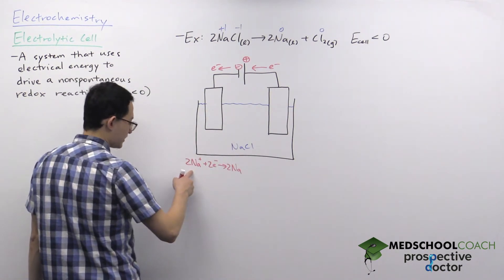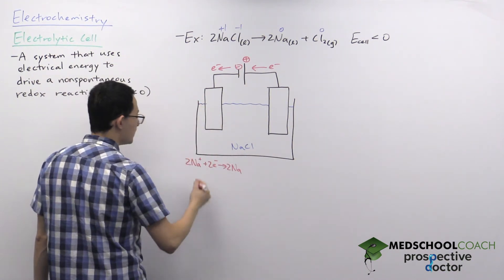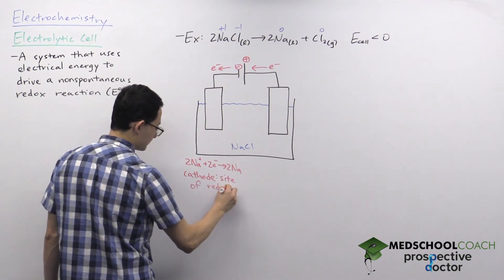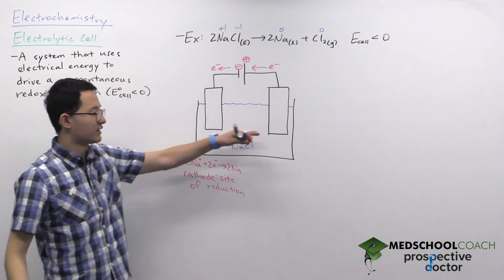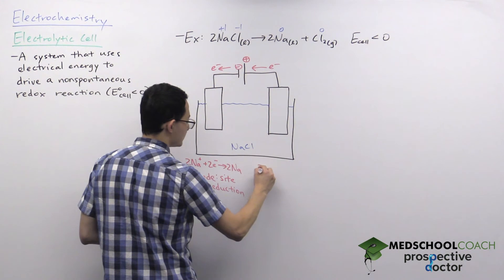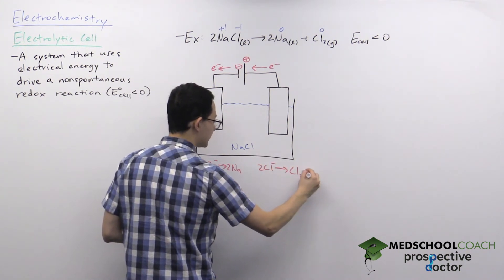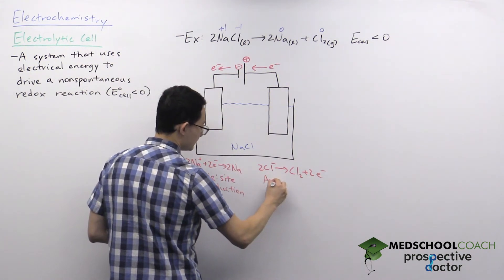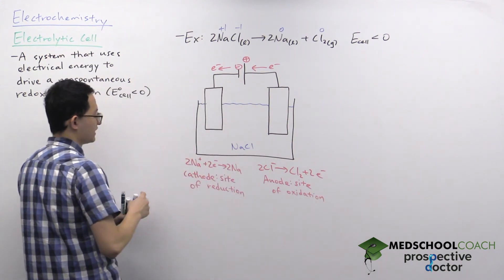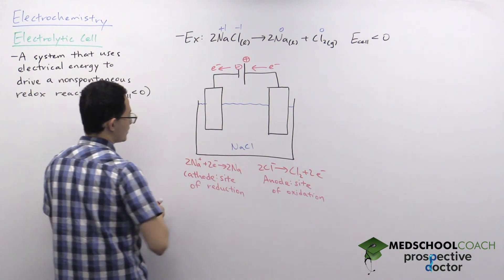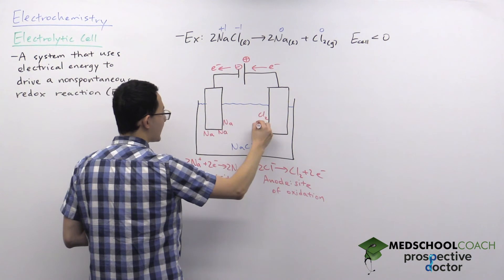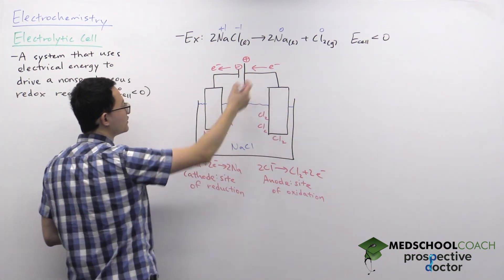The sodium cations are getting reduced at this electrode, so even though it's inert, we call it the cathode — it is the site of reduction. At the other electrode, electrons are leaving, because chlorine is being oxidized: 2Cl⁻ → Cl₂ + 2e⁻. This electrode is called the anode — the site of oxidation. Around the cathode we're producing sodium metal, and around the anode we're producing chlorine gas, which bubbles out of the system.